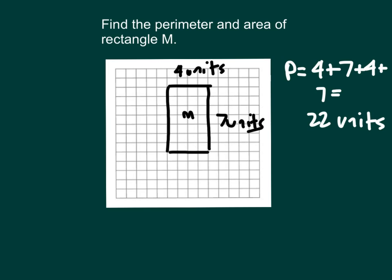Now our area — how do we figure out the area of this rectangle? One of the ways is to actually count the number of squares, because we're talking about square units. Let's count them: 1, 2, 3, 4, 5, 6, 7, 8, 9, 10, 11, 12, 13, 14, 15, 16, 17, 18, 19, 20, 21, 22, 23, 24, 25, 26, 27, 28. That's 28 square units.